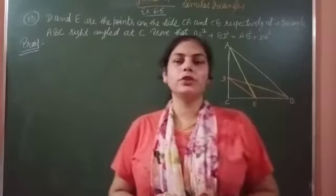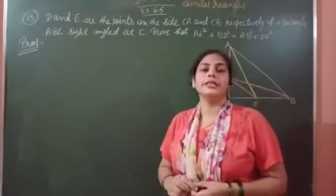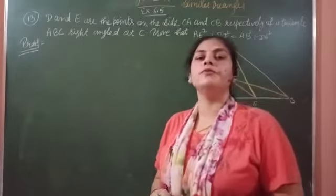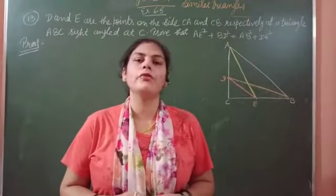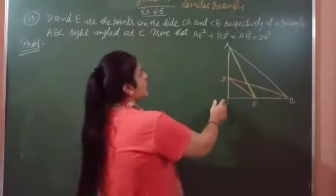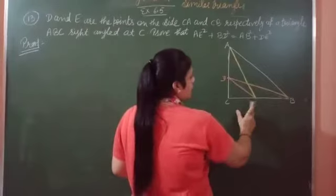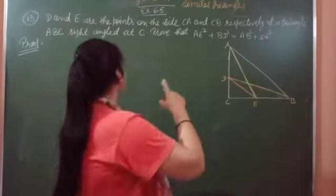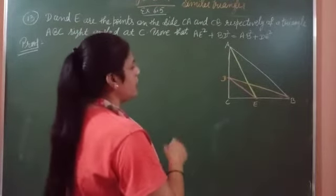Hello students, now we start our question number 13 of exercise 6.5 of chapter similar triangles of grade 10. Here our question is D and E are the points on side CA and CB.